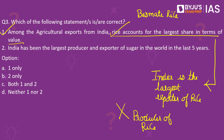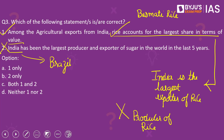The first statement is correct. Moving on to the second statement, which states India has been the largest producer and exporter of sugar in the world in the last five years — this statement is wrong. It is Brazil which is the largest producer as well as the exporter of sugar in the world in the last five years. So the answer to this question is A, one only.